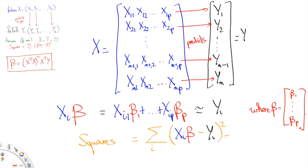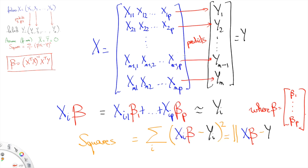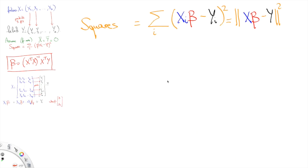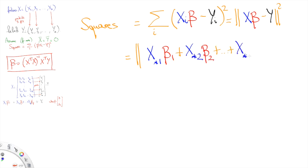In other words, we want to approximate some vector Y = (y1, ..., yn) with a linear combination of vectors X*beta. And X*beta is X1*beta1 plus X2*beta2 and so on until Xp*betap.